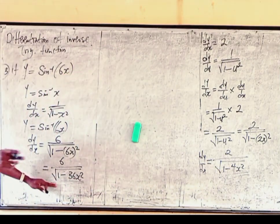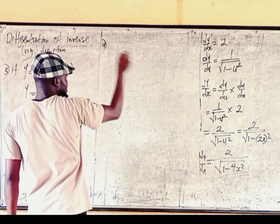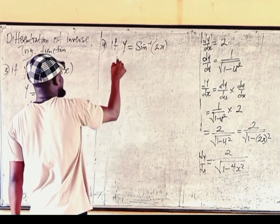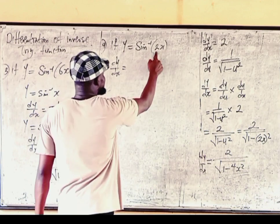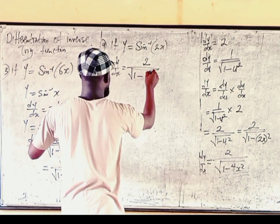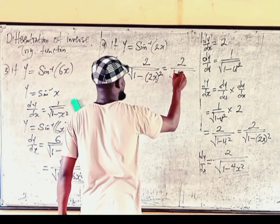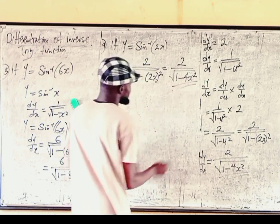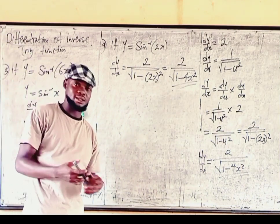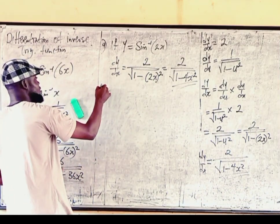If you try that, you will see it gives the same answer. We can verify with y equals sin inverse of 2x: differentiate 2x to get 2 in the numerator, then use 2x squared in the denominator to get 4x squared. So dy over dx equals 2 over the square root of 1 minus 4x squared — same answer as before. We can now state a general rule.